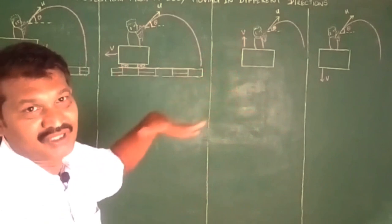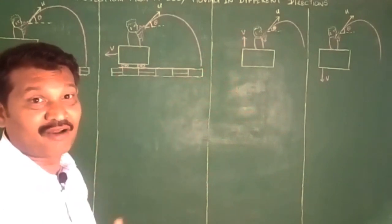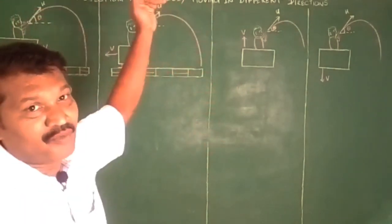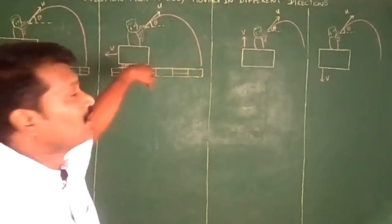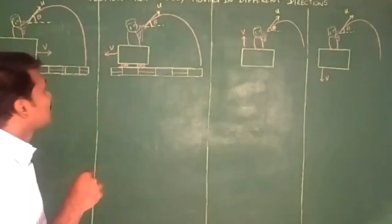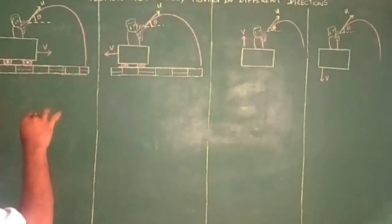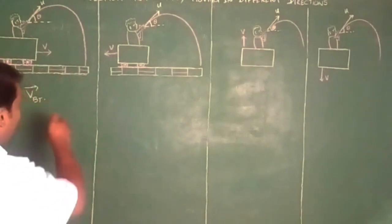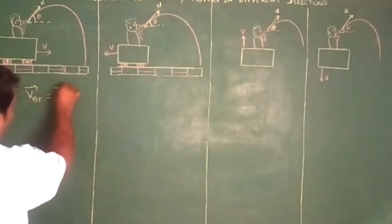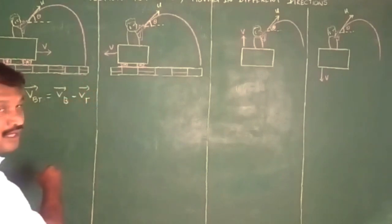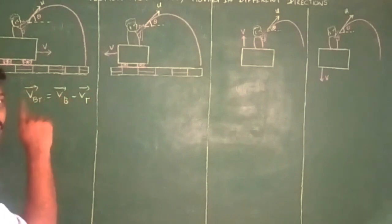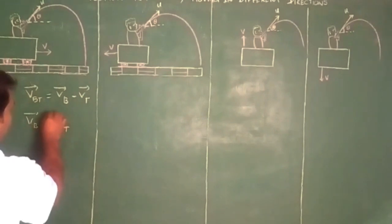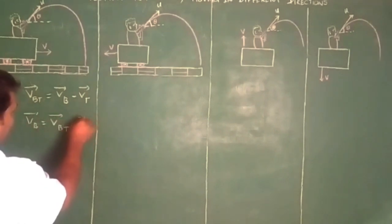In another case, if the ball is thrown upward — the ball is going upward, while the trolley is going downward. The first case: the ball is in the trolley. The relative velocity of the ball with respect to the trolley, V_BT, is equal to the velocity of the ball minus the velocity of the trolley. So to calculate the velocity of the ball, we calculate the velocity of the ball with respect to the trolley plus the velocity of the trolley.